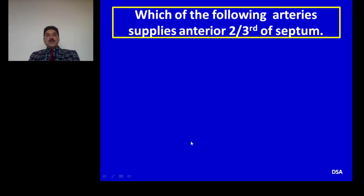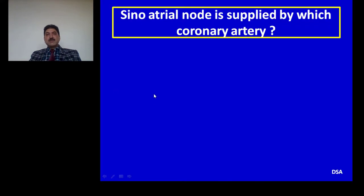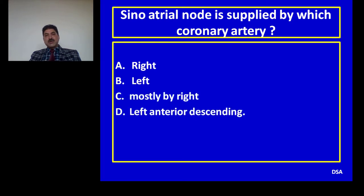Quiz question 1: Which of the following arteries supplies the anterior two-thirds of the interventricular septum? Options: right coronary artery, left coronary artery, left circumflex, left anterior descending coronary artery. Answer: The anterior two-thirds of the septum is supplied by the left anterior descending coronary artery through its septal branches. Question 2: The sinoatrial node is supplied by which coronary artery? Options: right, left, mostly by right, left anterior descending. Answer: Mostly supplied by the right coronary artery in almost 60% of cases; in the rest by the left coronary artery.